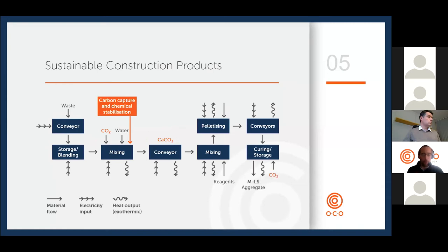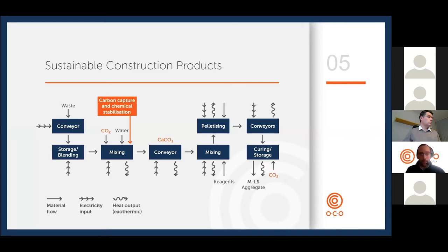The actual manufacturing process to convert fly ash or another thermal residue into an aggregate is more complicated and involves multiple steps. We take in materials from a number of different facilities into each site; they are stored in silos and blended together. The blending step is key for achieving consistency and the chemical and physical performance required. That blended material is delivered to a mixing vessel where we add water and liquid CO2, and during this step the carbon is converted into calcium carbonate, achieving chemical stabilization of heavy metal species — converted to less soluble carbonates — and pH moderation also stabilizes heavy metals.